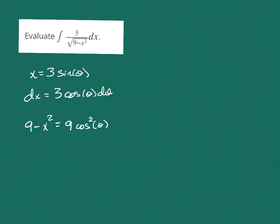So when we do that and we just plug in and evaluate now, what do we have? We've got a 3 on top, square root of now 9 cosine squared of theta on the bottom. And our dx becomes a 3 cosine of theta d theta at that point.